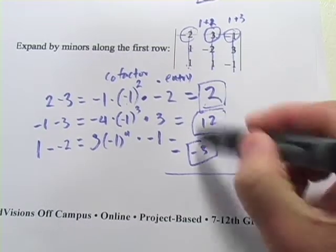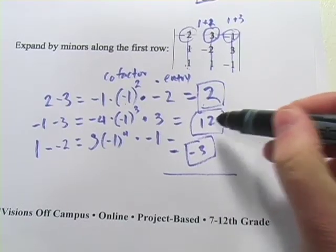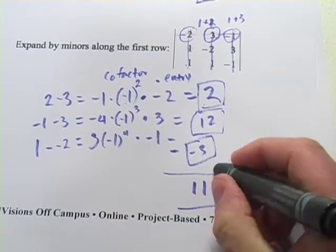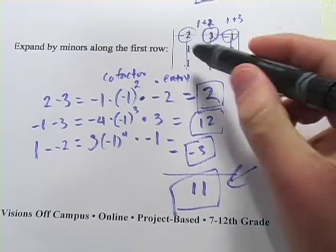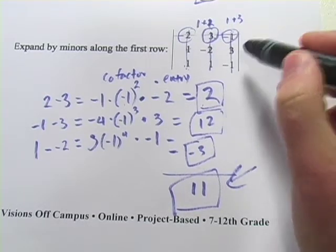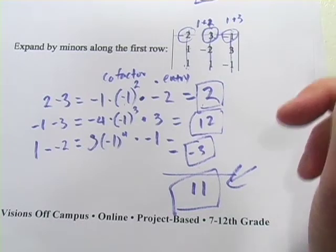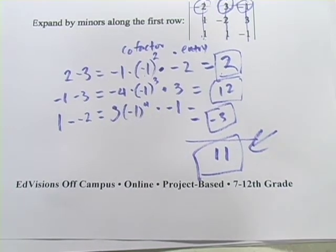And now we add all these together, and that's going to be our determinant. So 2 and a negative 3 is a negative 1, and 12, that's going to be 11. That is our answer. Now you can double-check that by doing the method with the diagonals to confirm that the determinant of this matrix is indeed 11. So that's a little bit of work with finding the determinants of 3x3 matrices.